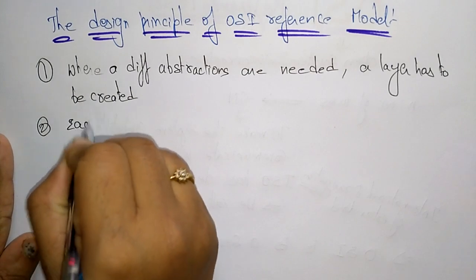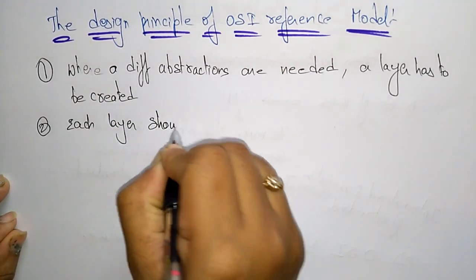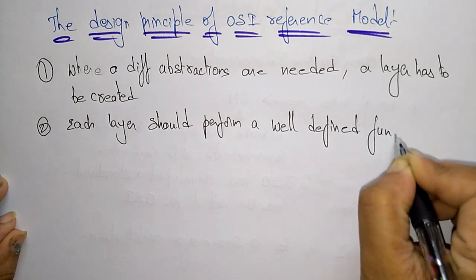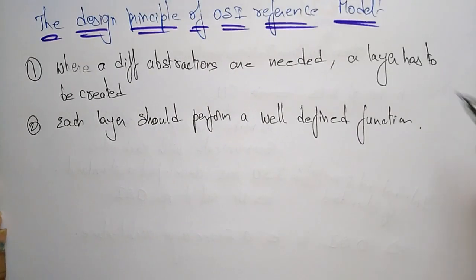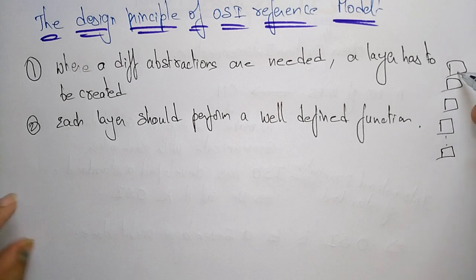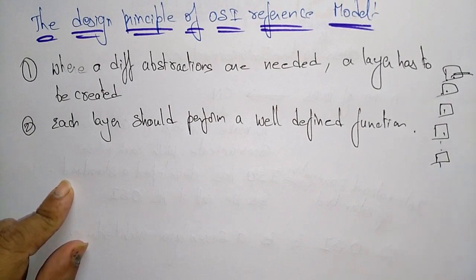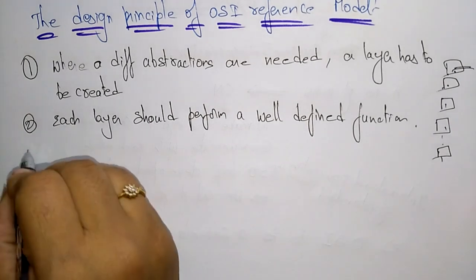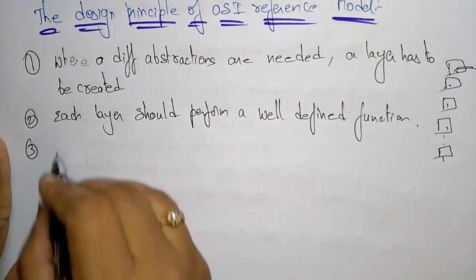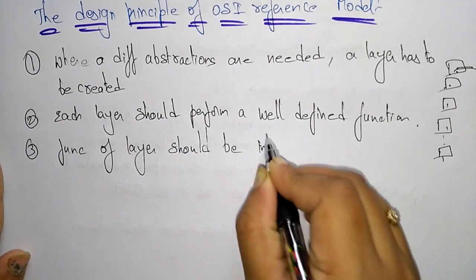Each layer should perform a well-defined function. The OSI reference model has seven layers, and each of those layers should perform some well-defined function. Furthermore, the function of each layer should follow an international standard.